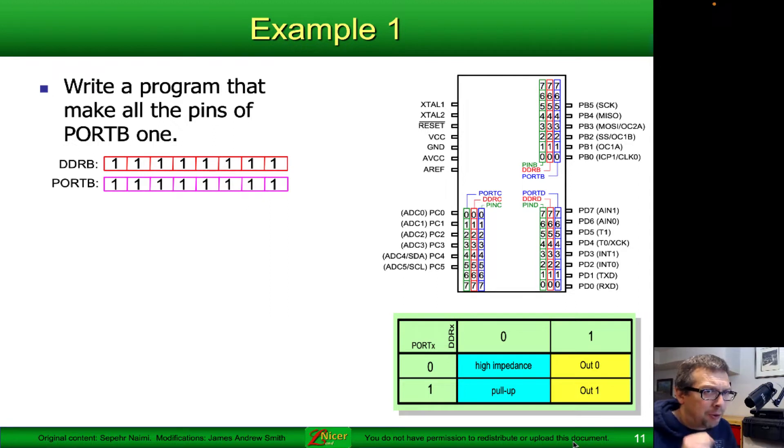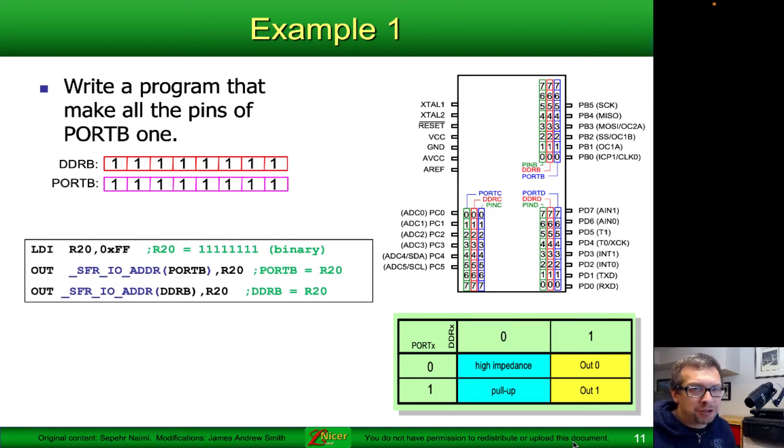We're basically going to output a bunch of logic highs, eight of them, from port B. That means that we have to set the data direction register for port B to all ones, so DDRB is equal to 1 all the way through eight times. Then the port B register, which is the output values for those outputs, are all set to 1 as well. To do this, we load immediately into register 20 and set them all to ones. Then from there, we take that value and copy it into the port B register.